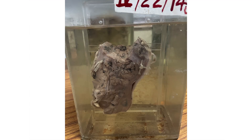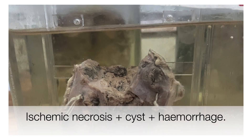Following is a large, bean-shaped specimen. The relative superior aspect has been extracted and the cut section shows large areas of ischemic necrosis, cystic changes and foci of hemorrhages.